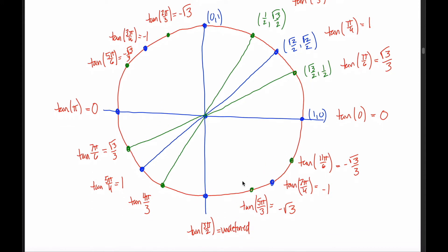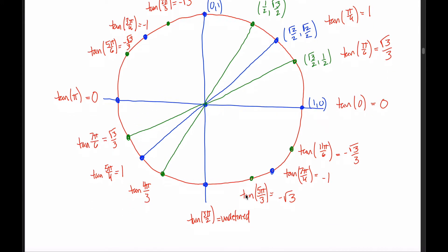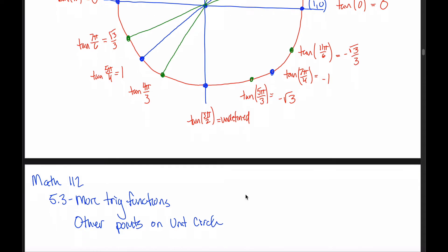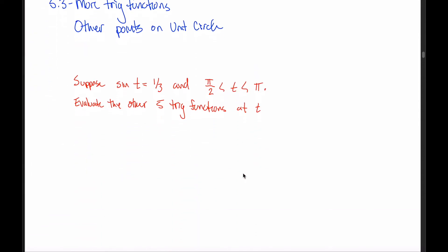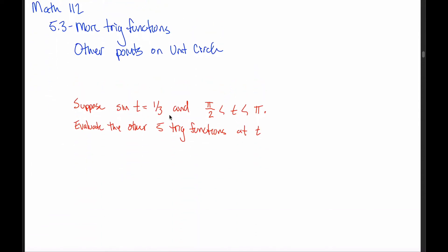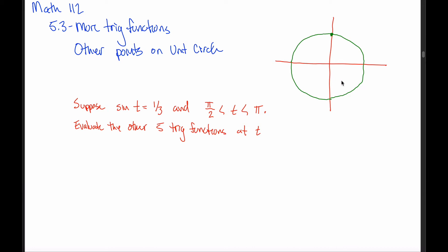In this video, we talk about those same six functions but at other points on the unit circle — not these 16 memorized ones. For example, suppose you were told there's some angle t, and you don't know what that angle is, but you do know that sine of t equals one-third. The sine is the y-coordinate, so a third of the way to 1 is roughly here. There are two different points that have sine of t equal to one-third: one in the first quadrant and one in the second quadrant.